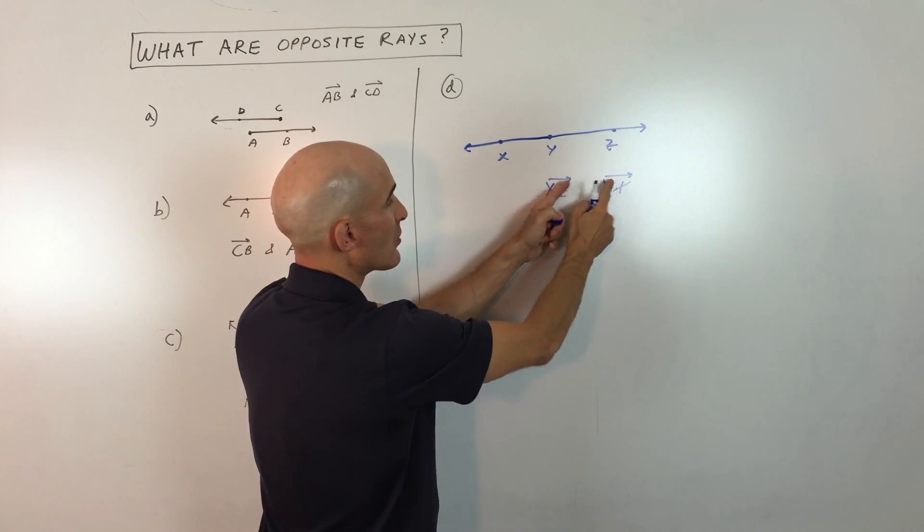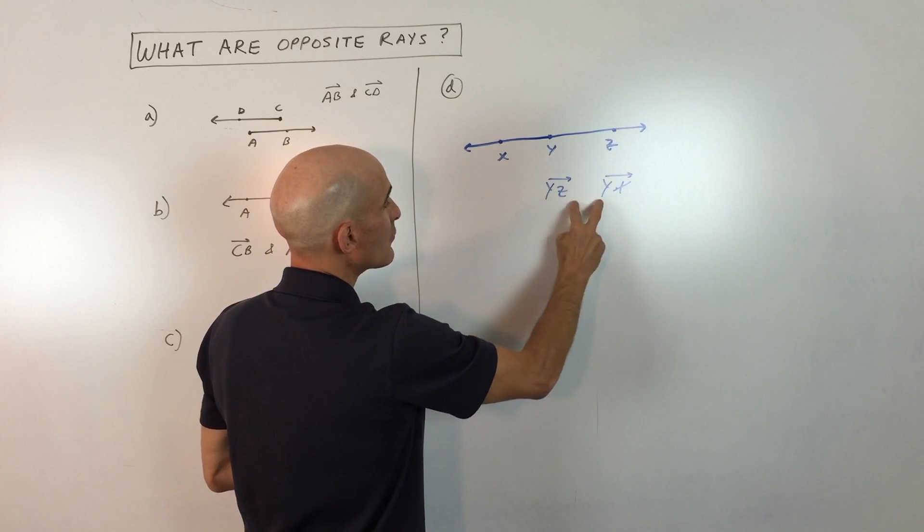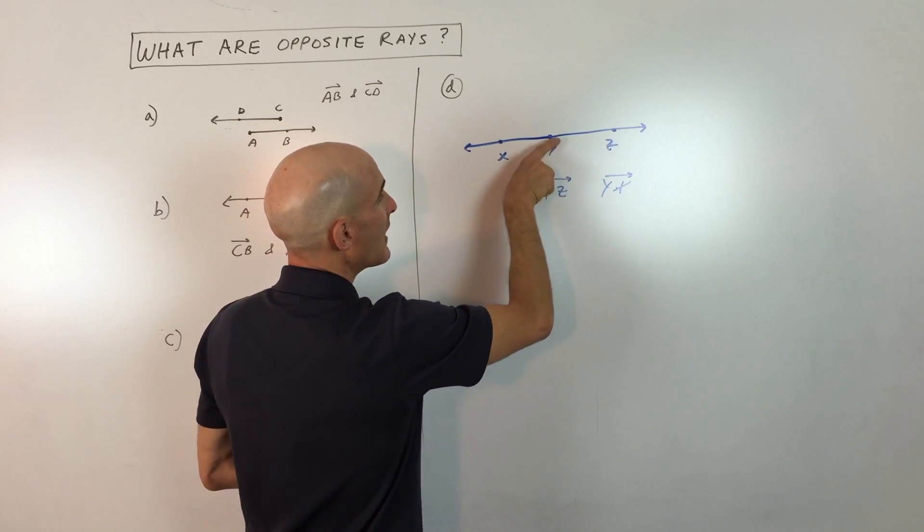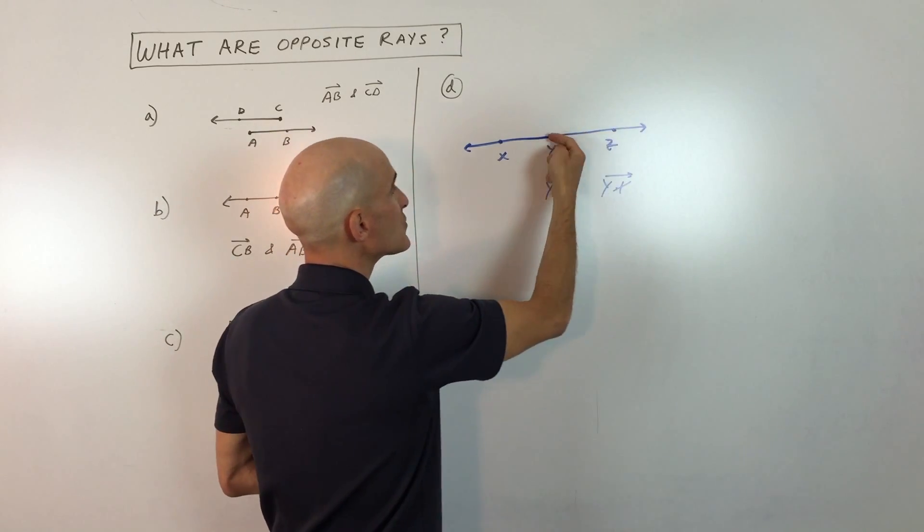Now again, notice how the arrows are always going to the right when you write the ray, but you can see they're both starting at Y, and then this one's going towards Z, and this one's going towards X.